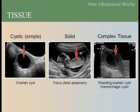There is another set of terms we use to describe tissues seen by ultrasound. Tissues are described as cystic, solid, or complex. The left image is an ovarian cyst. The middle image is a fetal abdomen, which appears solid. The right image shows complex tissue, which is an ovarian cyst that is bleeding or hemorrhagic. We will now look at each type of tissue more closely.